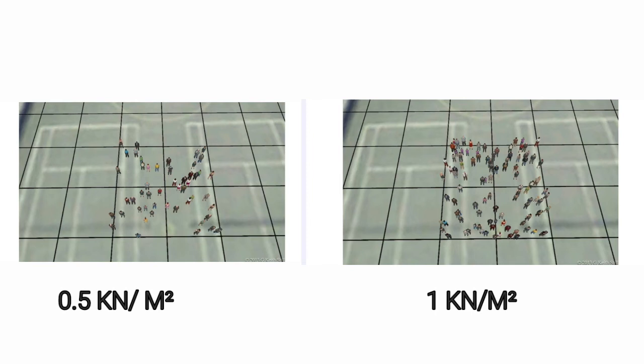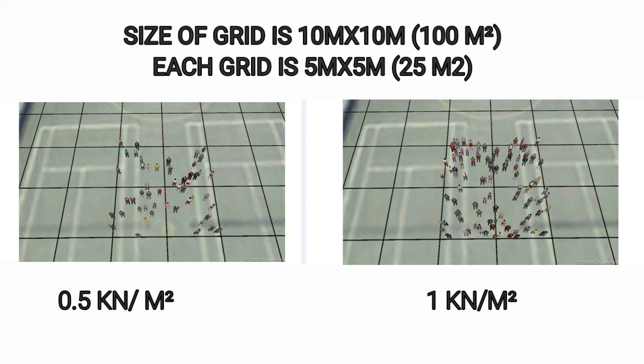Now we shall take an example of tennis court backdrop to get some idea of scale. Size of grid is 10 meter by 10 meter. Here each grid is 5 meter by 5 meter.